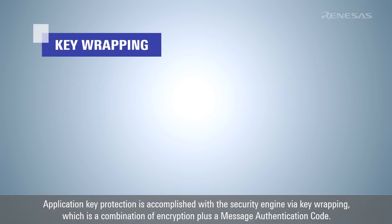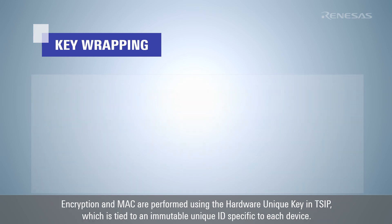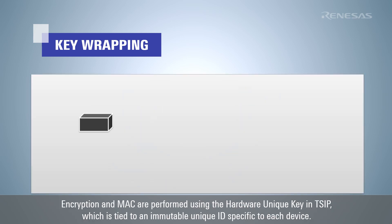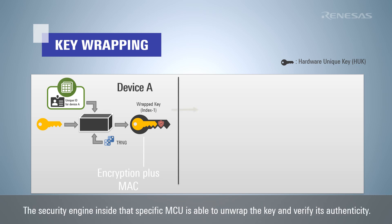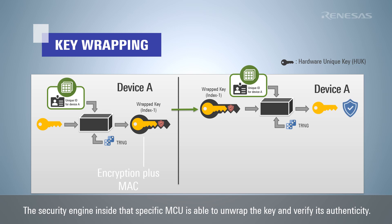Application key protection is accomplished with the security engine via key wrapping, which is a combination of encryption plus a message authentication code. Encryption and MAC are performed using the hardware unique key in TSIP, which is tied to an immutable unique ID specific to each device. The security engine inside that specific MCU is able to unwrap the key and verify its authenticity.